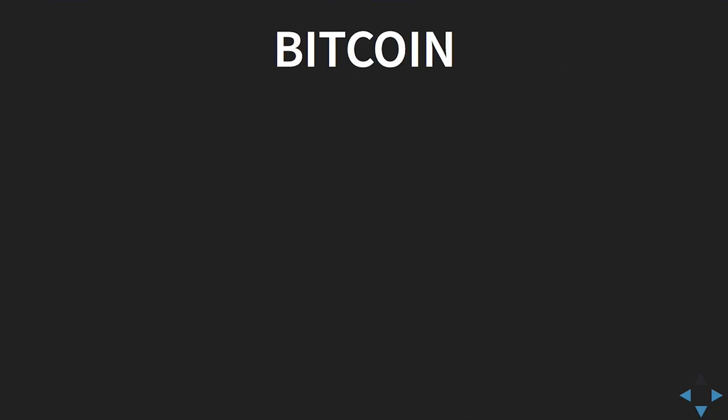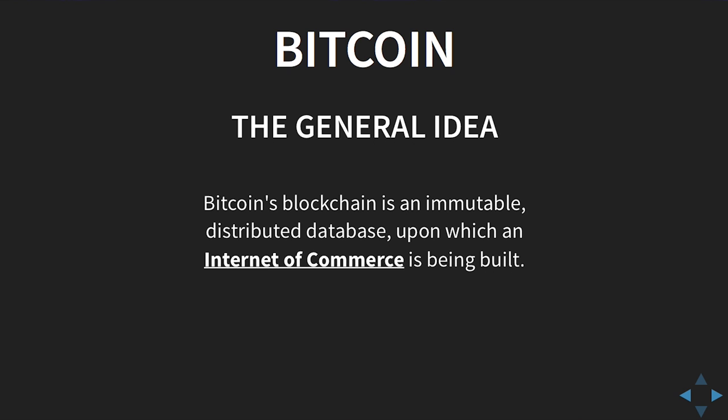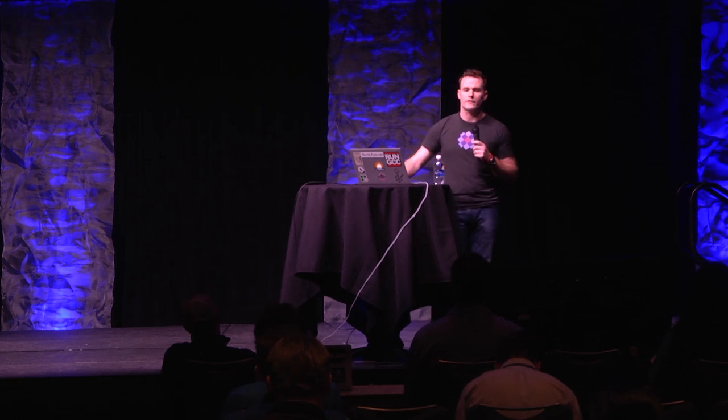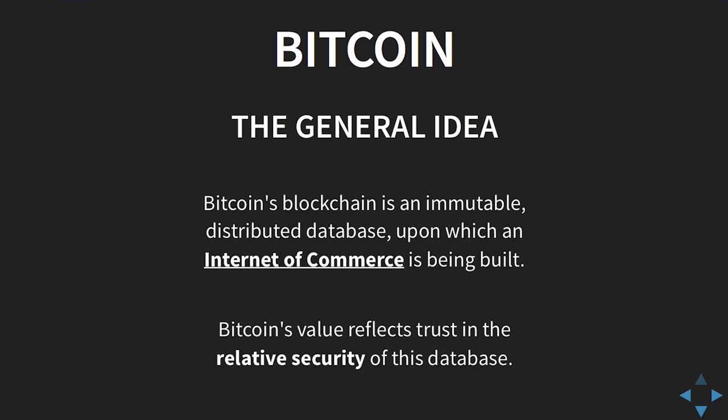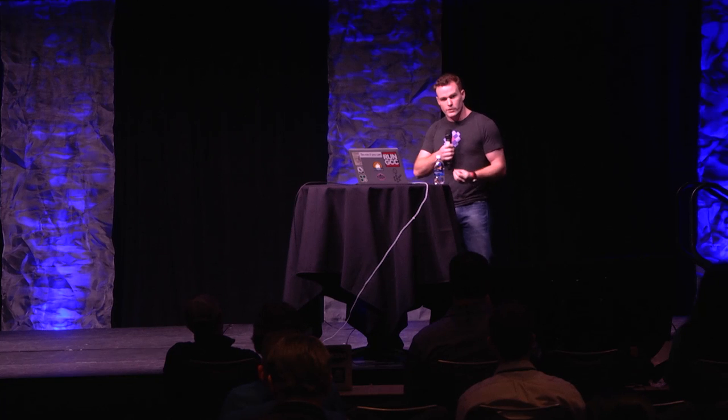So what is Bitcoin? The general idea: it's an immutable database. It's spread out — everybody keeps a copy of the database and you can verify proofs against it. We're building not just an internet of things, but an internet of commerce: payment systems, stored value systems, smart contracts — everything you imagine in the current web is being built on top of this immutable database. The value of Bitcoin, the currency, reflects our trust in this database, and the currency price on the markets reflects how trustworthy that asset is.